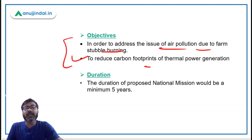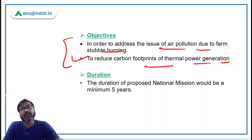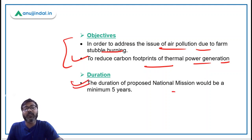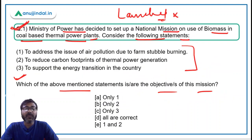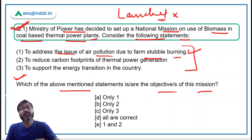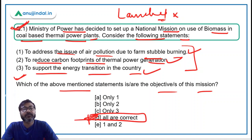The broader objectives of this mission are: to address the issue of air pollution due to farm stubble burning, and to reduce the carbon footprints of thermal power generation. To reduce carbon dioxide emissions, the mission promotes use of non-conventional energy forms like biomass. The proposed national mission would have a minimum duration of five years. Since all three statements are objectives, the correct answer is option D — all are the objectives.